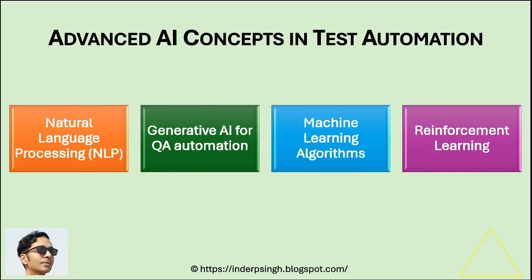AI in test automation has moved beyond simple rule-based automation. AI for test automation can create dynamic and intelligent solutions for automation testing. AI in testing automation can handle use cases like test case generation, defect prediction, and test prioritization without manual intervention.